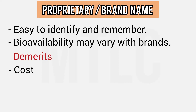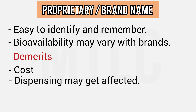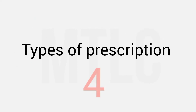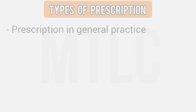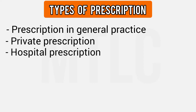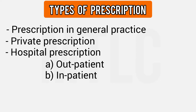The disadvantage of brand name prescribing is cost. We can prescribe a drug by its official generic name, which can also be a cheaper option. The generic name is correct, and the pharmacist can substitute it. If you call a rare drug, you can search the stock available. There are 4 types of prescriptions: prescription in general practice, private prescriptions, hospital prescriptions for outpatients, and hospital prescriptions for inpatients.